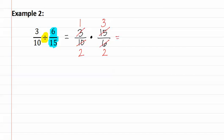We now multiply the numerators together. One times three is three, and two times two is four. This is our answer.